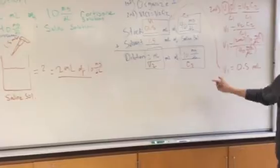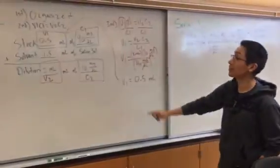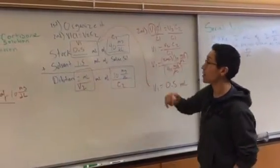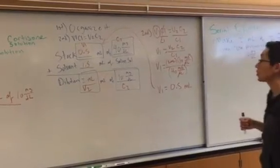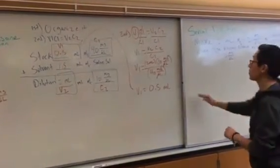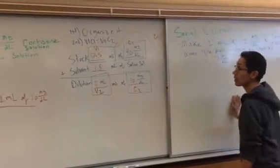And that's a simple dilution made easier just using these two steps, organize it, and then put in our V1 C1 equals V2 C2. Let's go ahead and move over to our serial dilution using the same steps.